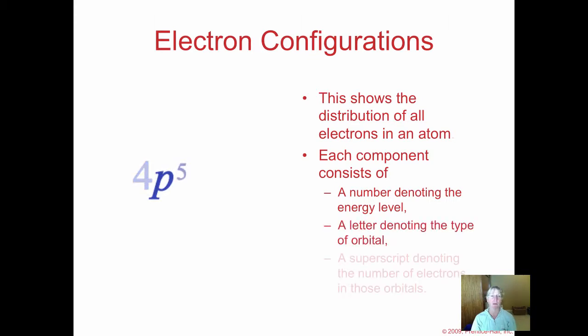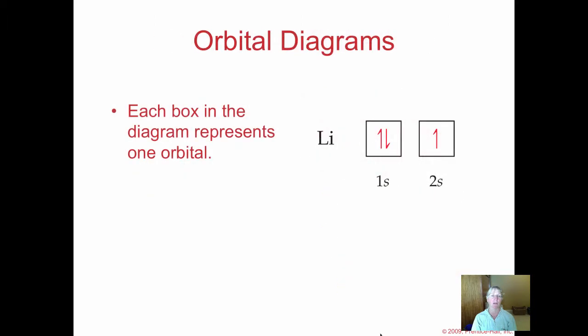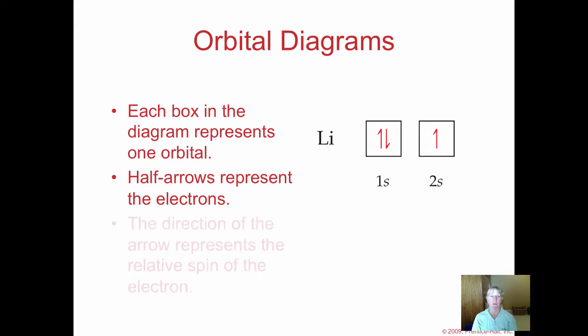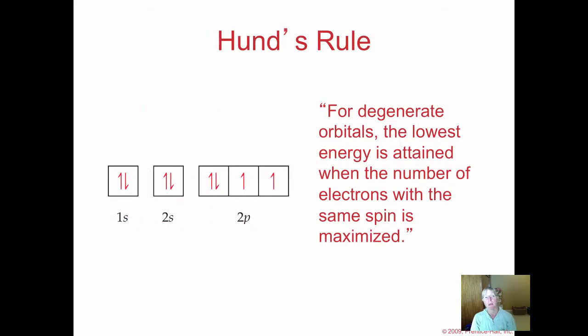A variation of the quantum numbers is electron configurations we learned last year. The large number stands for your energy level, the letter for the shape of the orbital, and the superscript shows the number of electrons in that shape orbital at that distance from the nucleus. Besides electron configurations, you could draw orbital diagrams. Boxes stand for orbitals, up and down arrows stand for electrons with opposite spins. It's okay to have half-filled orbitals, and this will be critical as we study bonding.